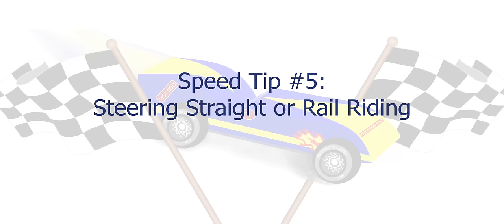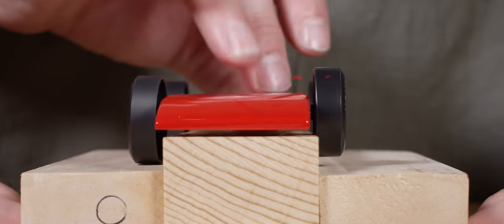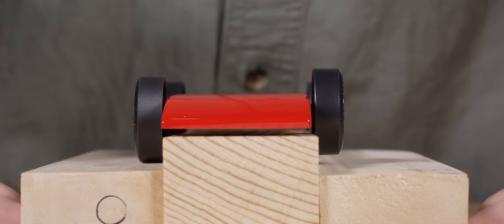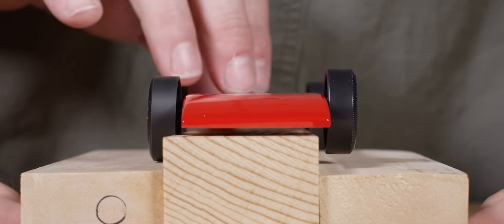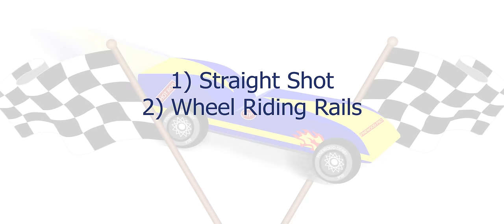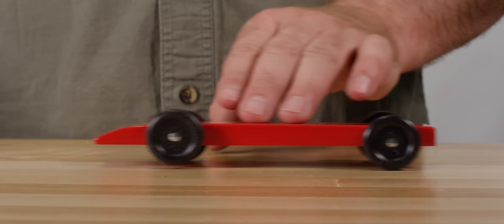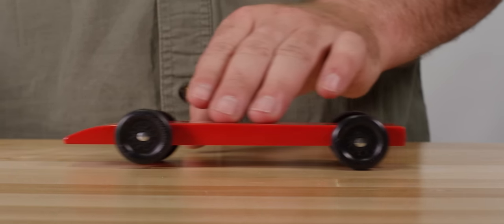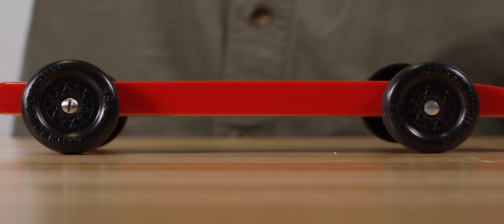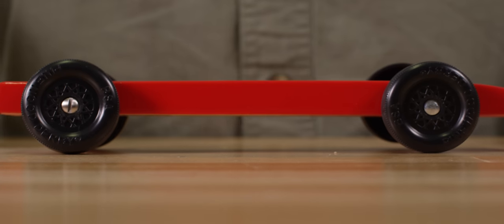Speed tip number five is about steering your car. Poorly aligned axles make your car steer crooked, causing it to ricochet off the center guide rails as it flies down the track. Every time it bounces off the rail, your car loses energy and speed. There are two schools of thought for steering your car. You can steer it perfectly straight so it doesn't hit the center guide rail, or you can gently steer a front wheel into the guide rail to make one wheel ride the rail all the way down the track thereby avoiding crashing back and forth off the guide rail. Rail riding is a proven speed technique but it does not work on all tracks.